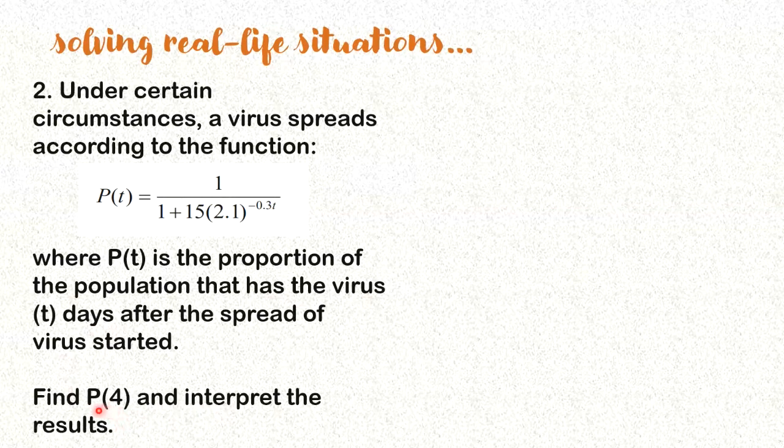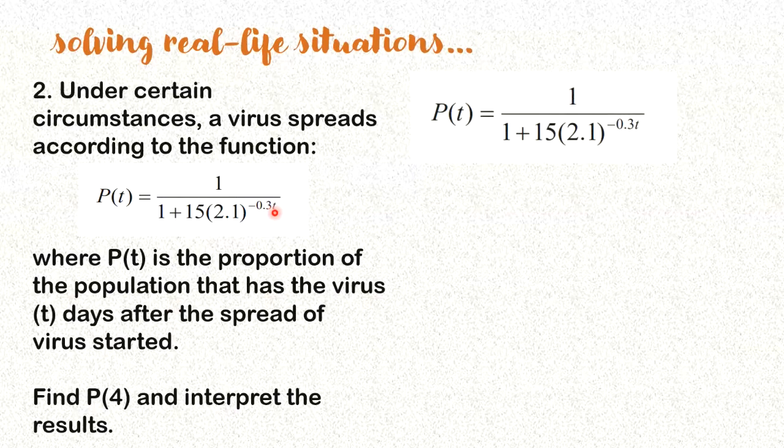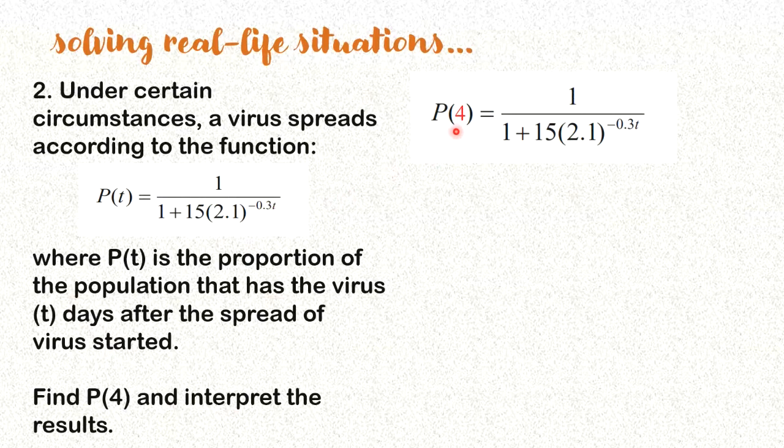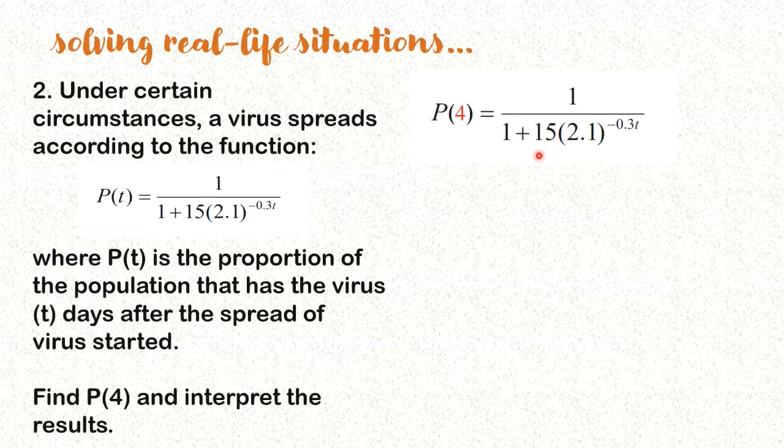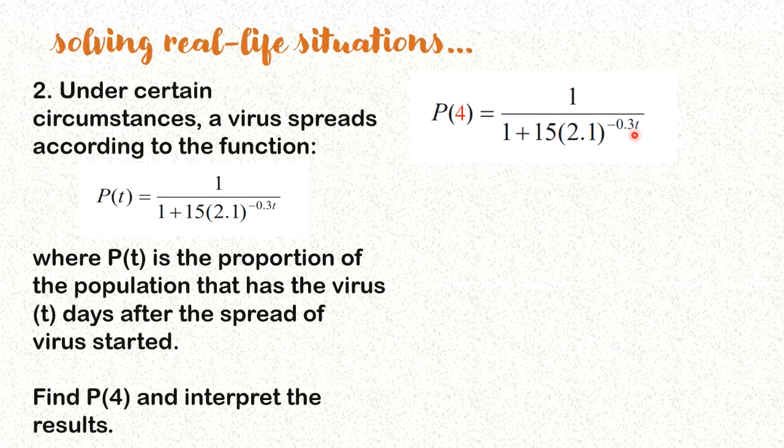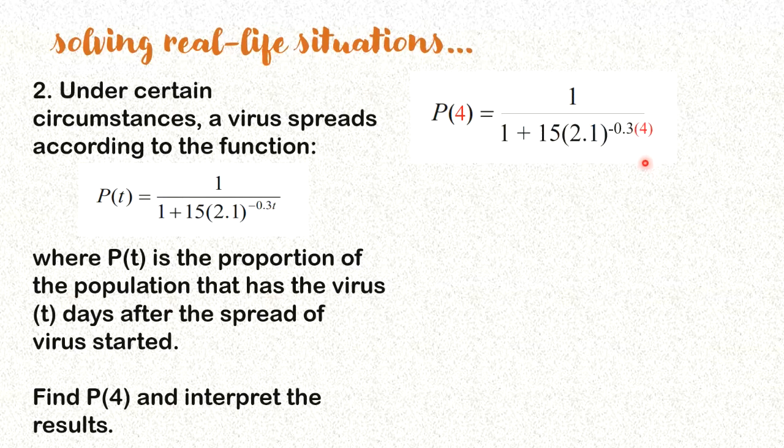So it's easy, right? How do we get P(4)? We just substitute 4 for all the t's we see. If this is the given function, if we're looking for P(4), the t that you see here, we'll just replace with 4. So it becomes -0.3 times 4. Obviously you have to use your calculator to get the value of P(4). If you do that, you're going to have this value, 0.1397. So how do we interpret this? What do you mean by 0.1397?